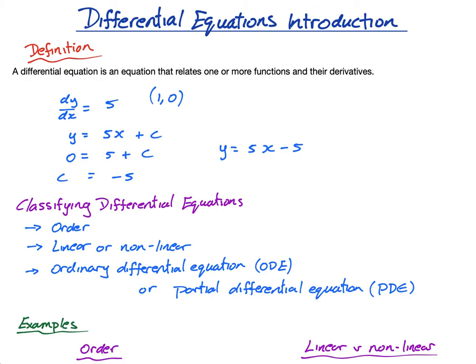So let me just write those two things down. This is the general solution, and this is a particular solution. Without that point, the differential equation has an infinite number of solutions — that's why this is called the general solution. But if it tells you that a particular solution passes through a specific point, then by finding c we have a particular solution.